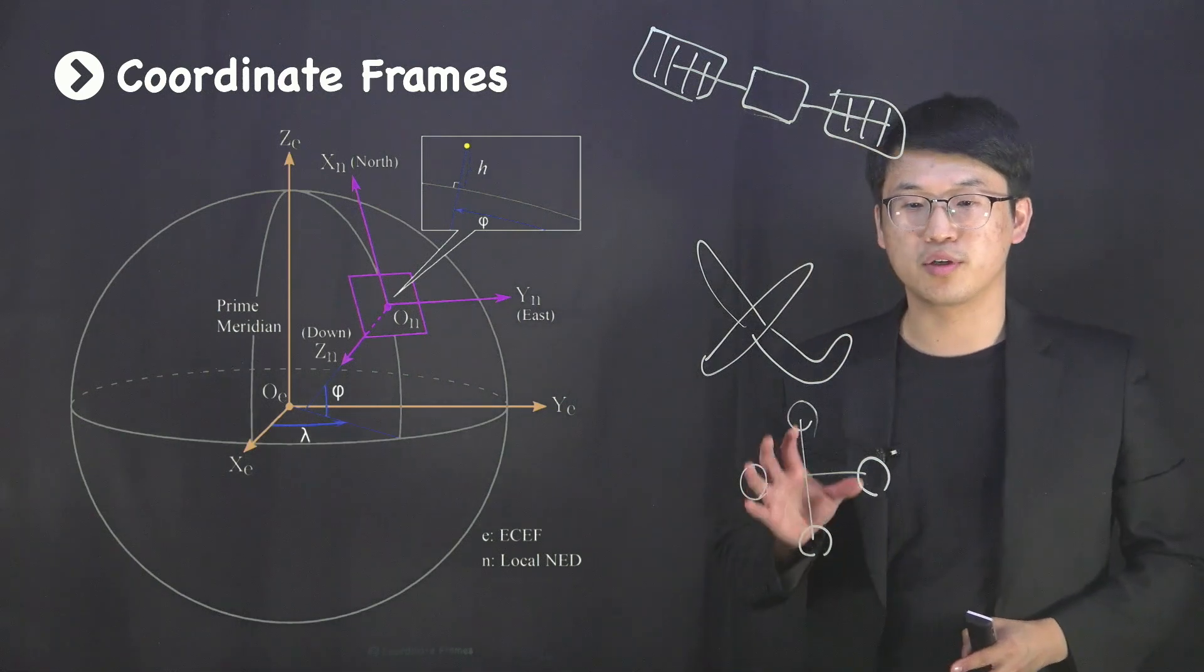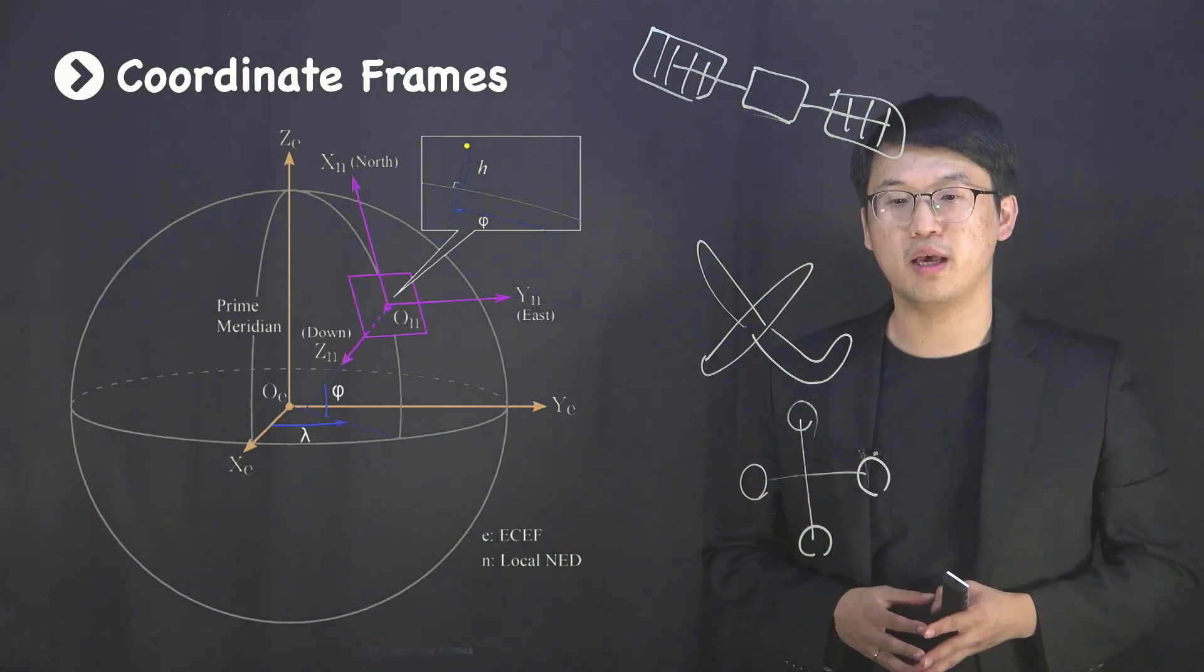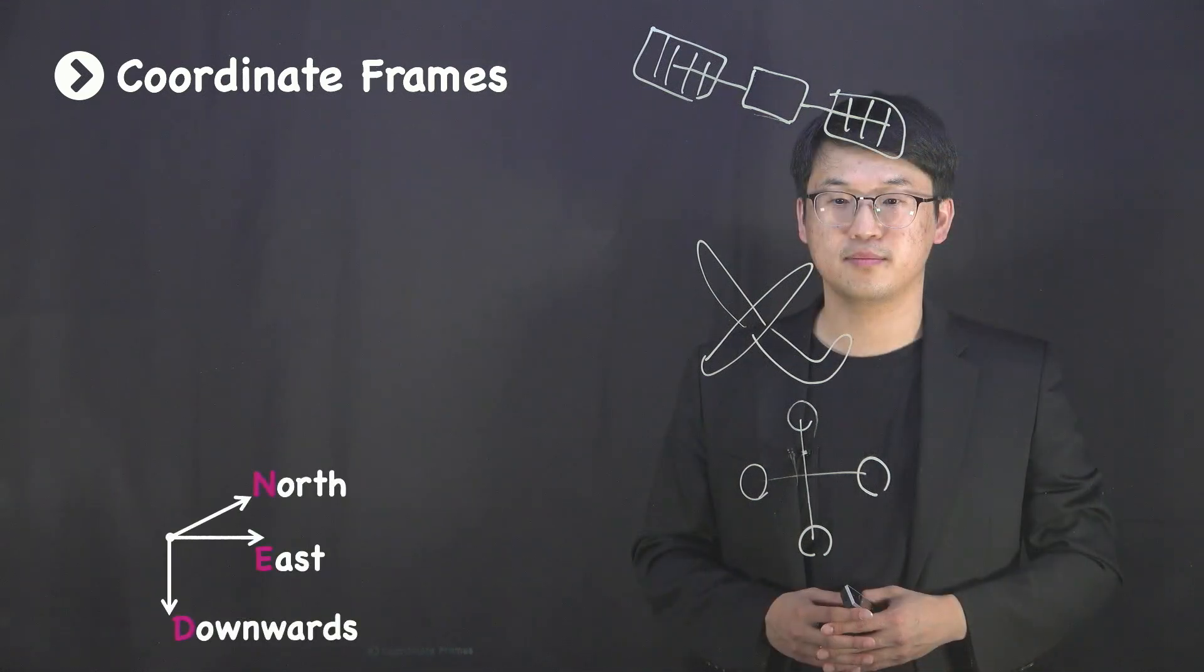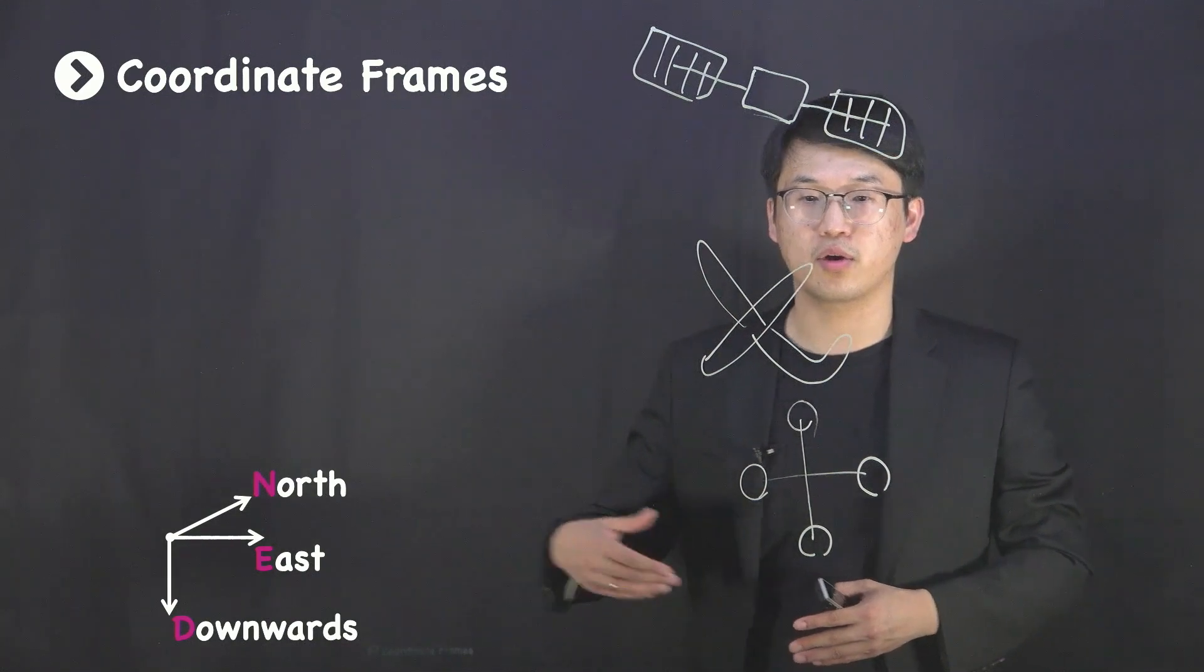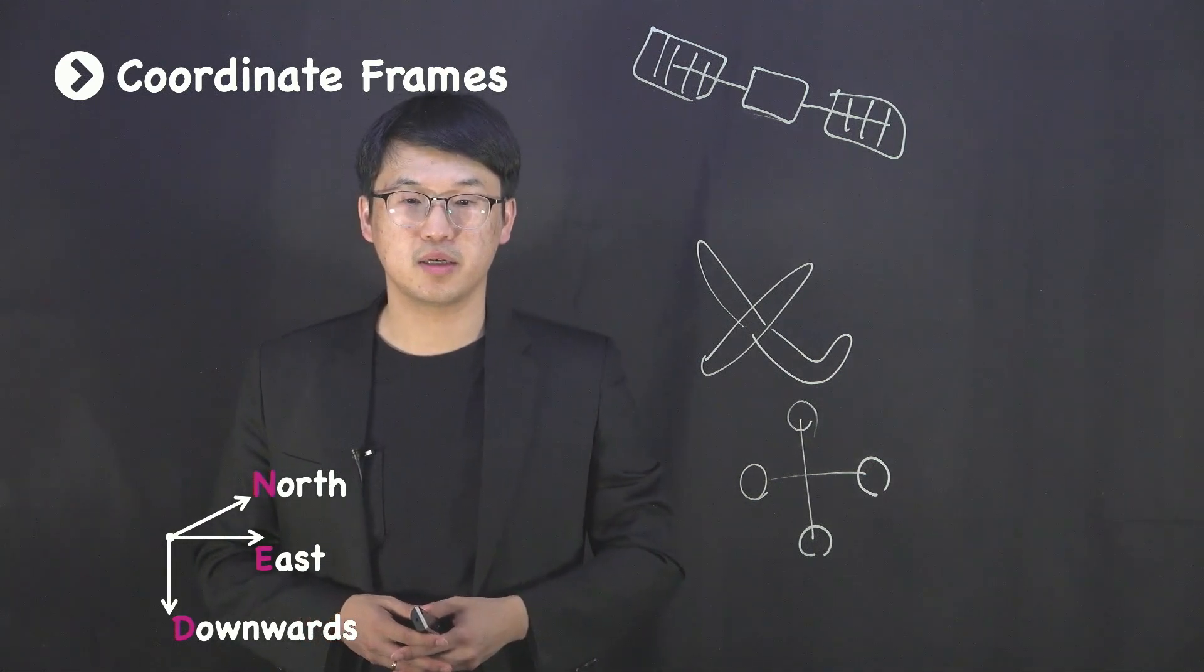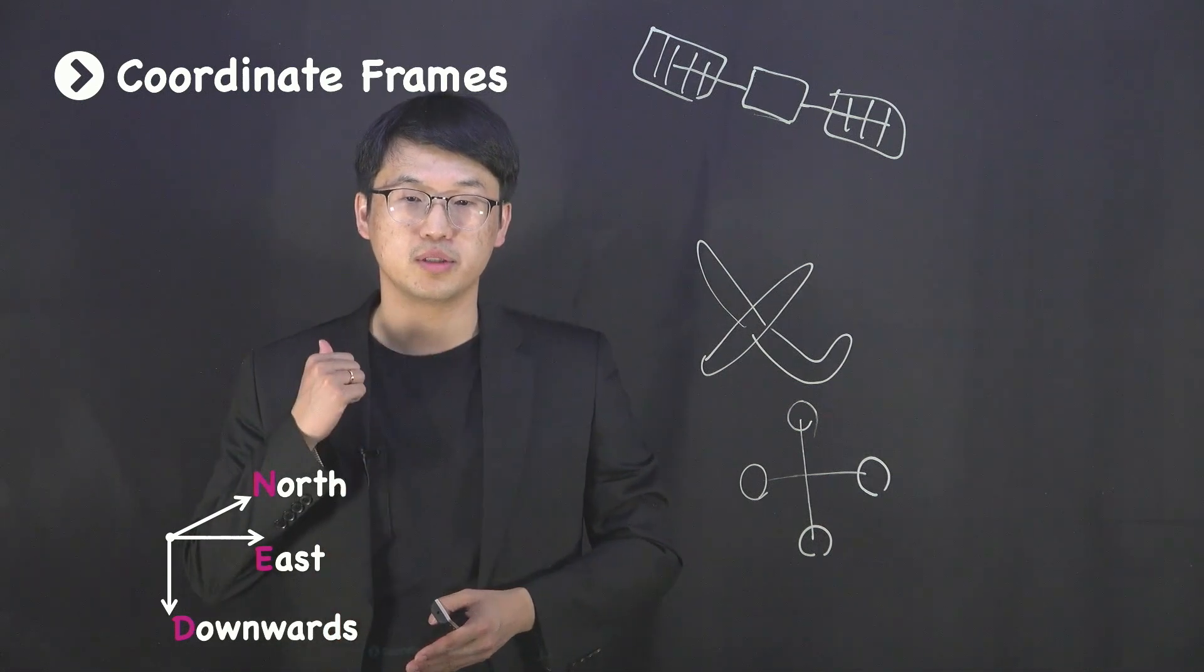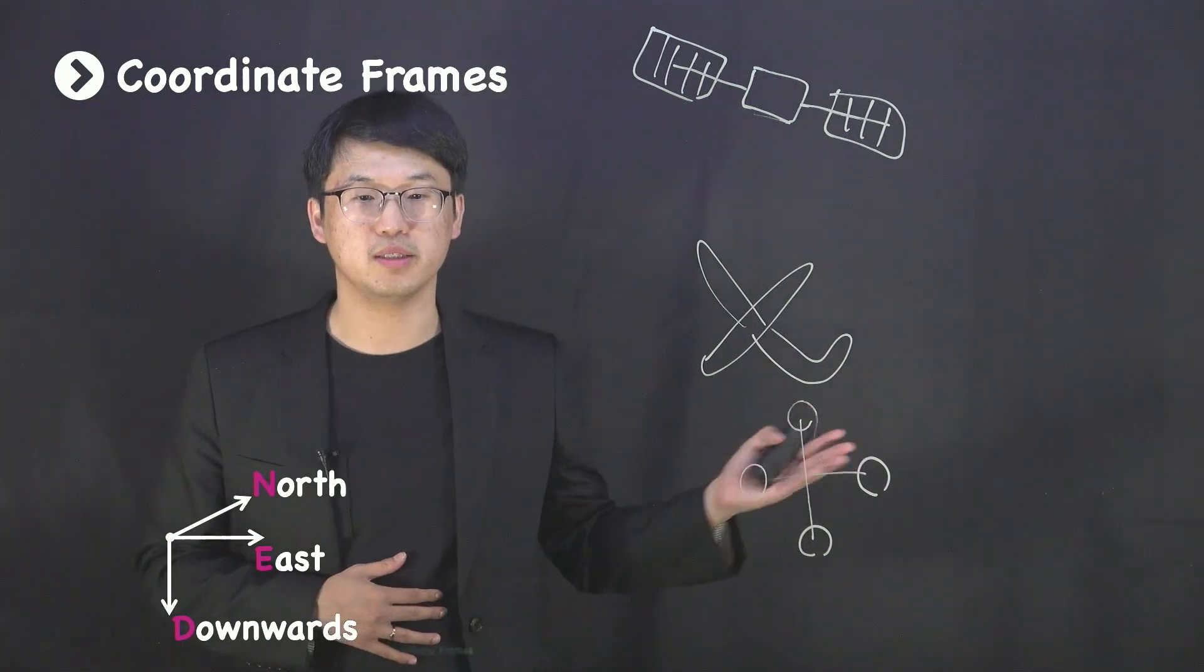In modeling a quadrotor UAV, it is enough to use the local NED frame as our inertial frame of reference. The origin of a local NED frame is located on the surface of the Earth at some local reference point with Z-axis pointing inwards, X-axis pointing to the local north, and Y-axis pointing to the local east.